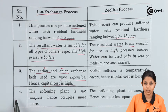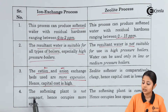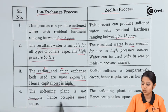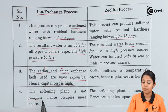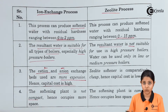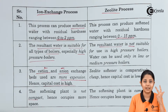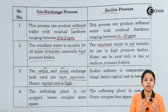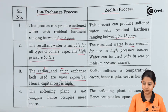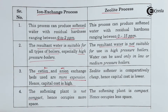The fourth point: the ion exchange softening plant is not compact and hence occupies more space, because it has three big chambers — the cationic chamber, the anionic chamber, and the gas chamber. For the zeolite process, the softening plant is compact and hence occupies less space, because you simply add the chemicals to the water sample.